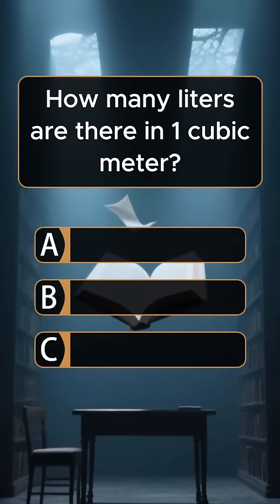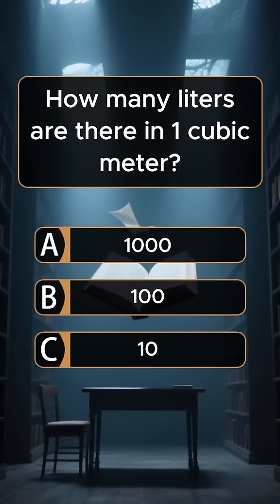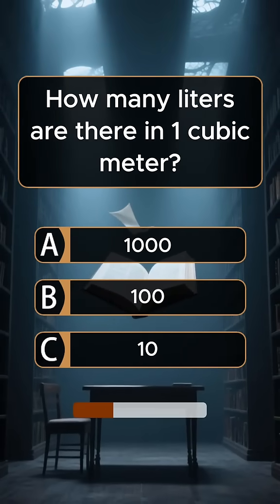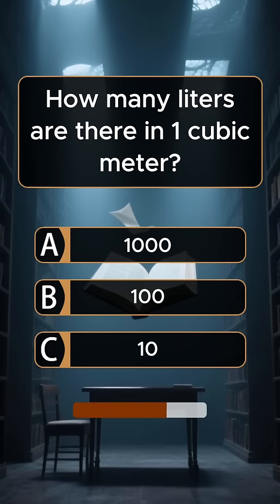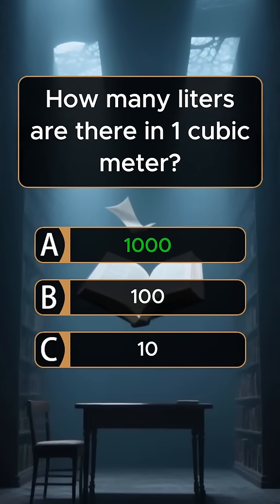Question 7. How many liters are there in one cubic meter? Answer A. 1000.